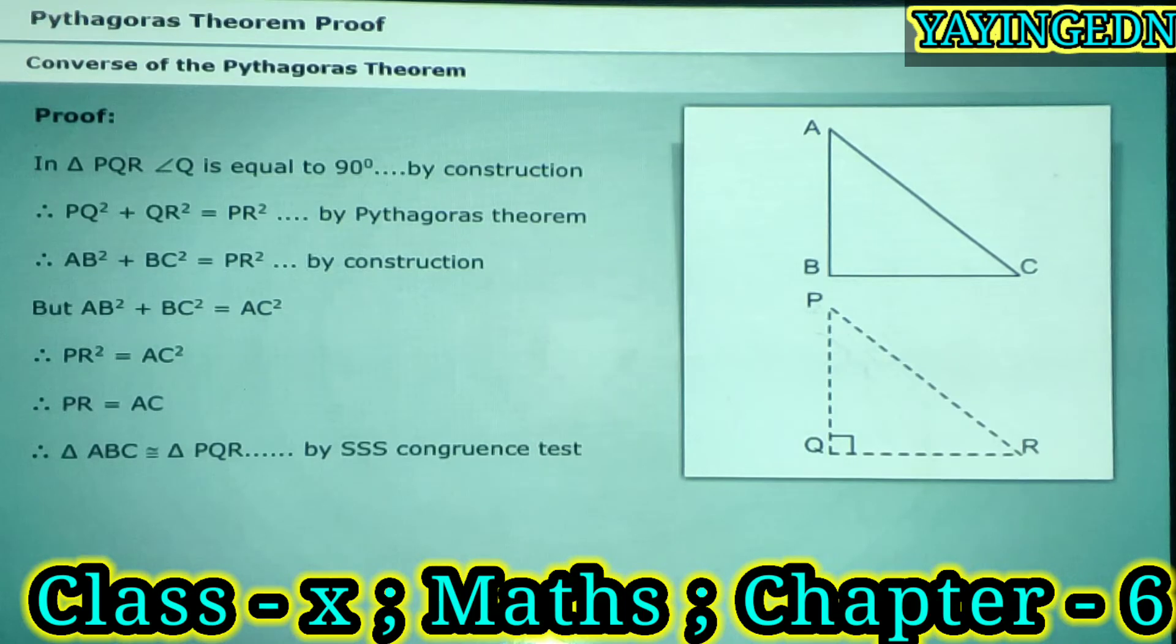Therefore, triangle ABC is congruent to triangle PQR by the SSS congruence test. Therefore, angle B is equal to angle Q is equal to 90 degrees.